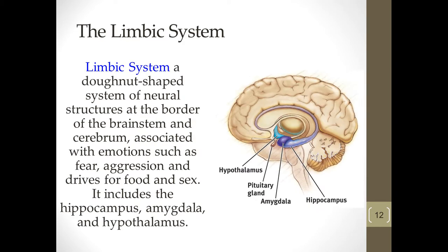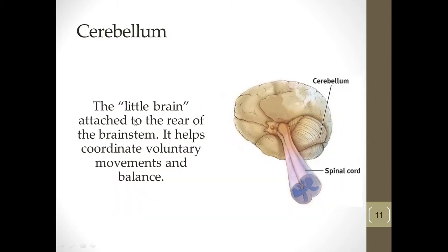All of this — the brainstem and the cerebellum — happens without any cognitive input. These are things that happen effortlessly and automatically. You don't have to think about breathing. If something dangerous happens and you start running, you're not thinking about it — these portions of your brain are enabling you to do it effortlessly. Most species have a brain stem and probably most of them also have a cerebellum.